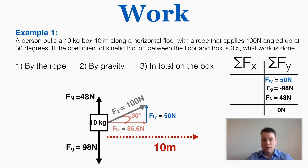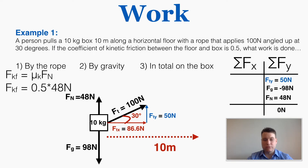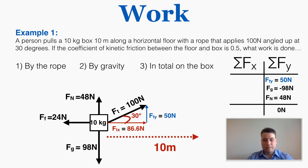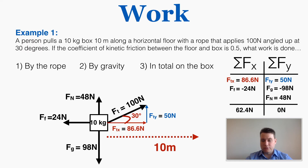The force of kinetic friction equals the coefficient times the normal force. Multiplying 0.5 by 48 Newtons gives 24 Newtons of friction pointing to the left, always opposing the motion. With the complete free body diagram, the net force in the x direction is the tension component of 86.6 Newtons minus friction of 24 Newtons, giving a net force of 62.4 Newtons to the right.